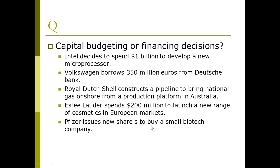Pfizer issues new shares to buy a small biotech company. This is tricky — issuing new shares is a financing decision, but buying the biotech company involves spending money, making it a capital budgeting decision. So this sentence involves both: the capital budgeting decision is to buy the small biotech company, and the capital structure decision is issuing new stocks instead of borrowing long-term debt to fund that project.